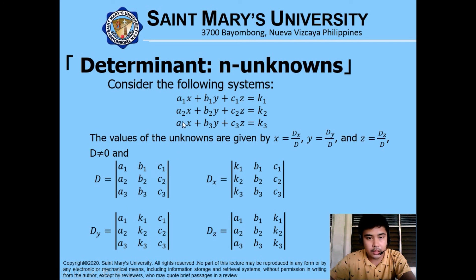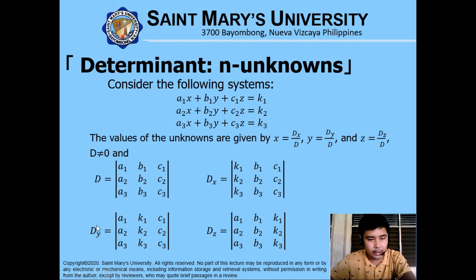The denominator determinant D contains entries a sub 1, b sub 1, c sub 1 for the first equation; a sub 2, b sub 2, c sub 2 for the second; and a sub 3, b sub 3, c sub 3 for the third. To find x, replace the coefficients of x with the constants k sub 1, k sub 2, k sub 3. For Dy, replace the coefficients of y with the constants, and for Dz, replace the coefficients of z with the constants.